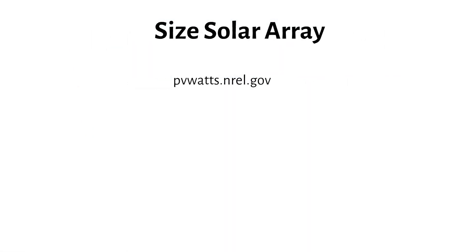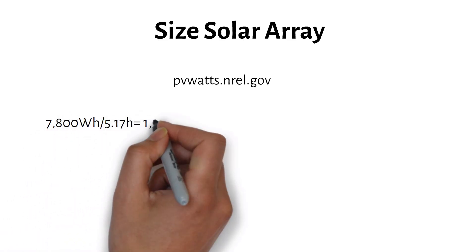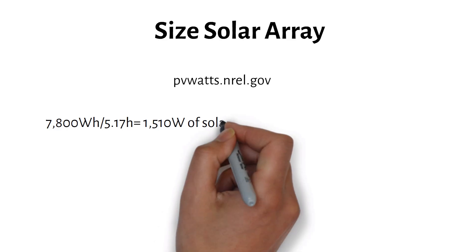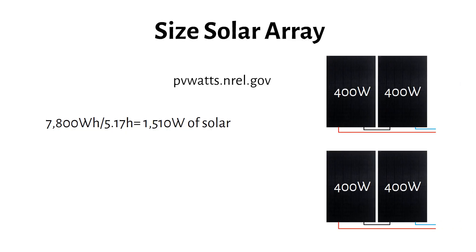I size the panels to recharge the 7800 watt-hour battery in one day. I divide this by the sun hours to get 1510W of solar. I'll round this up to a practical array size. Four panels of 400W each makes 1600W of solar power.